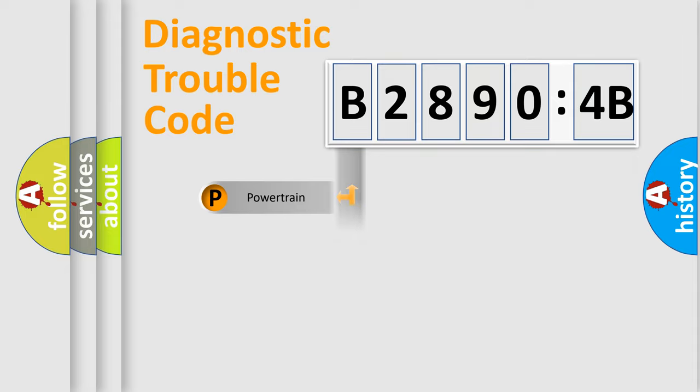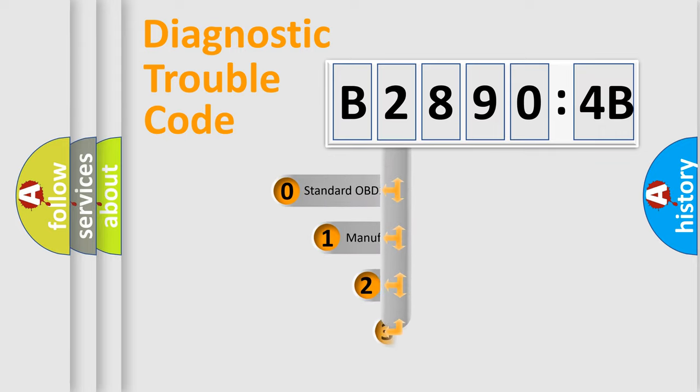Powertrain, Body, Chassis, and Network. This distribution is defined in the first character code.